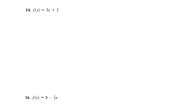In problem number 14, we're looking for the derivative of the function f of x equals 3x plus 2. That derivative is a function that will give me the slope of the tangent line at any point along that curve. Since this is a straight line and it has a constant slope of 3 everywhere along the line, the result should come out to be 3.